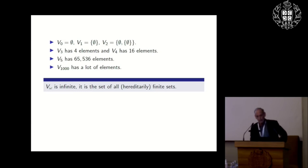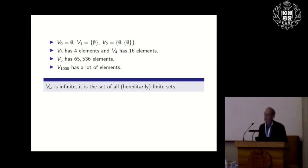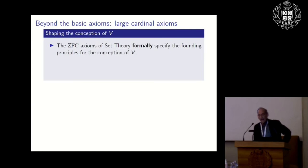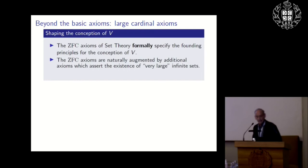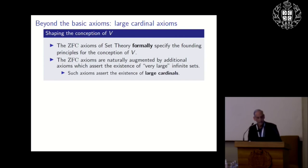We can add new axioms to the formal ZFC axioms, and these axioms assert the existence of very large infinite sets. The conception of the V-alphas basically gives you the ZFC axioms, with the axiom of choice not obviously following from that conception alone. We can then add new axioms that assert the existence of large cardinals — in other words, very large sets.